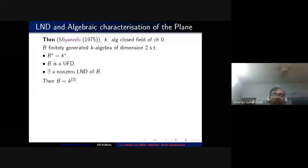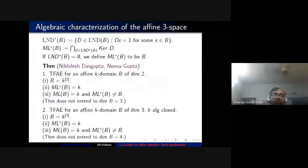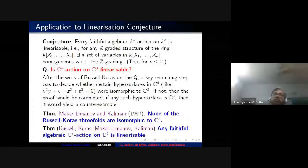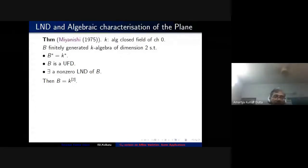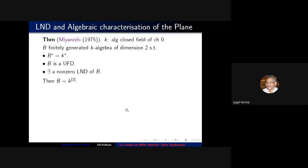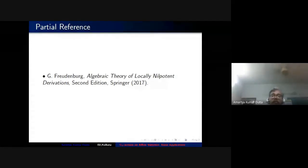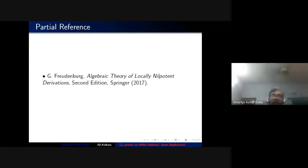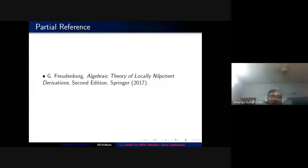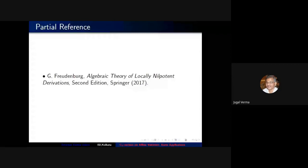Next we will talk about the characterization of the plane and the three-space, starting from here on Friday. A partial reference for locally nilpotent derivations: an excellent monograph is G. Freudenberg's 'Algebraic Theory of Locally Nilpotent Derivations'. You should look at the second edition, because many problems from the first edition (2006) were solved later and new results were included.